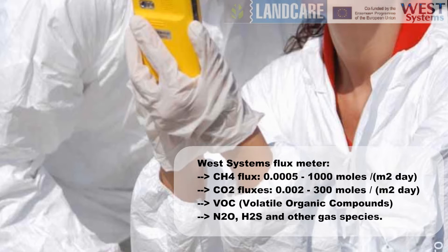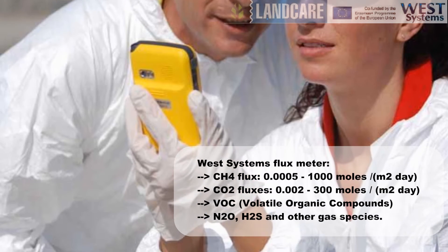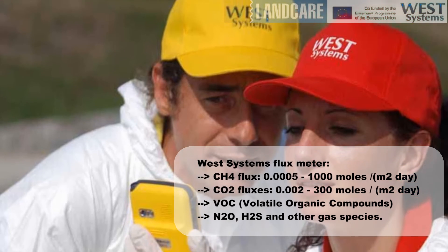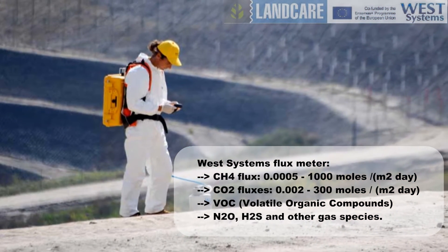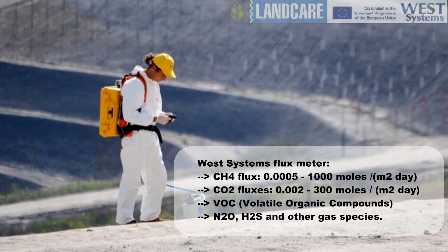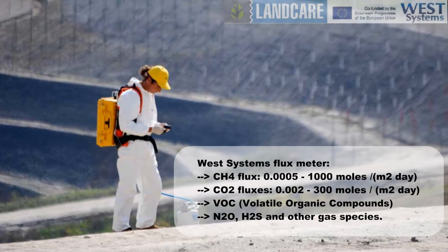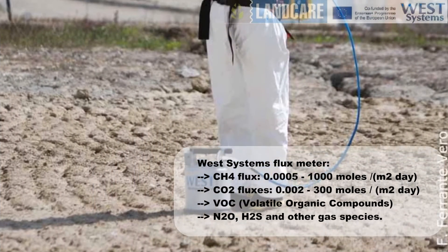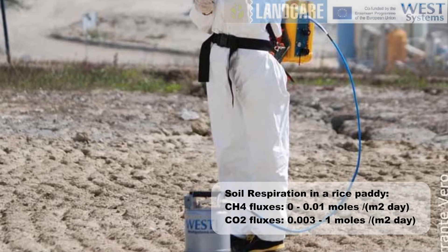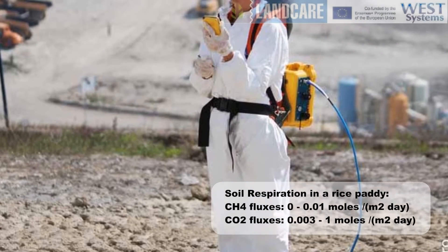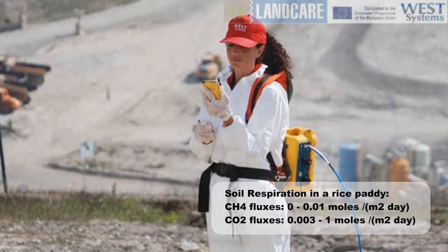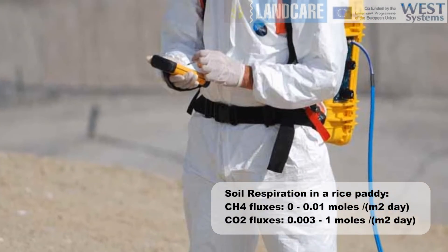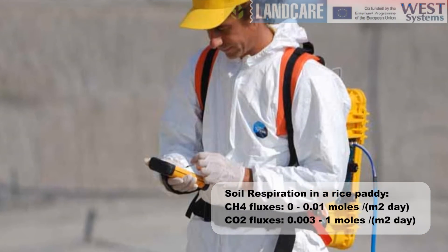The West Systems flux meter can measure methane fluxes from 0.0005 to 1,000 moles per square meter per day and carbon dioxide fluxes from 0.002 to 300 moles per square meter per day. Measurements can be extended to VOC or volatile organic compounds, nitrous oxide, and other gas species. Normal soil respiration in a rice paddy produces methane fluxes ranging from 0 to 0.01 moles per square meter per day and carbon dioxide fluxes ranging from 0.003 to 1 mole per square meter per day.